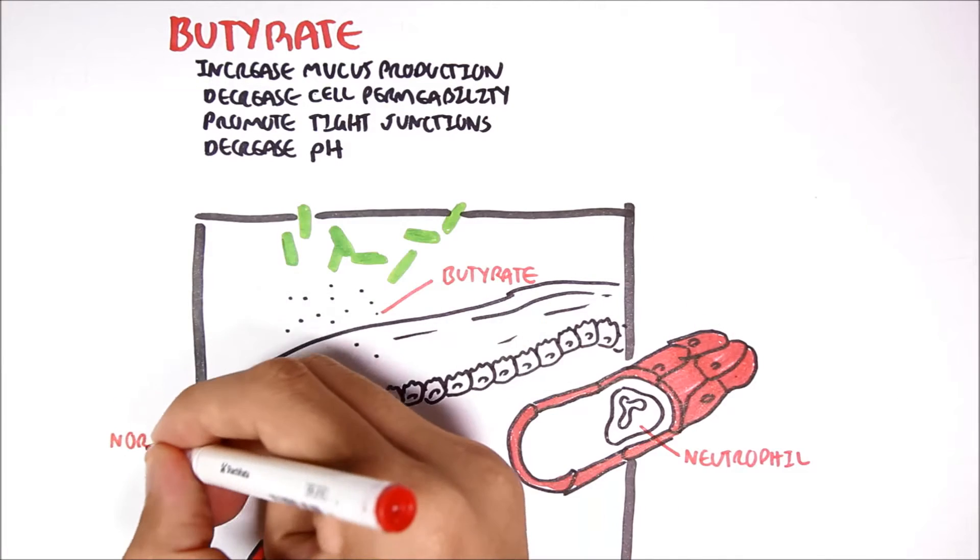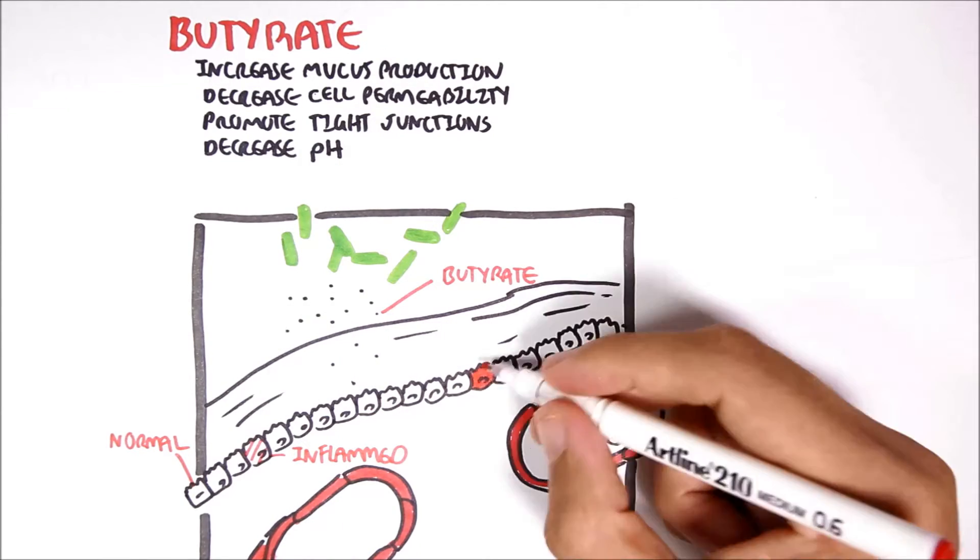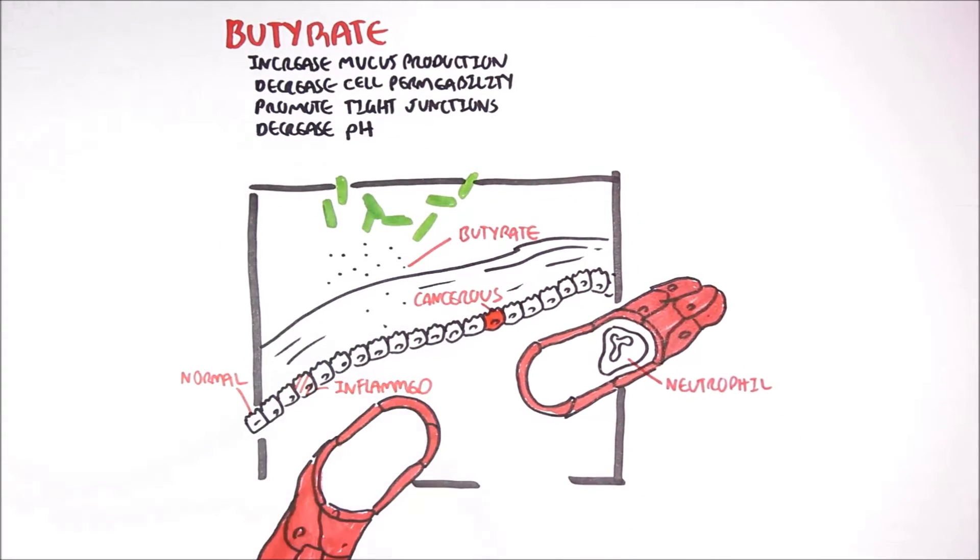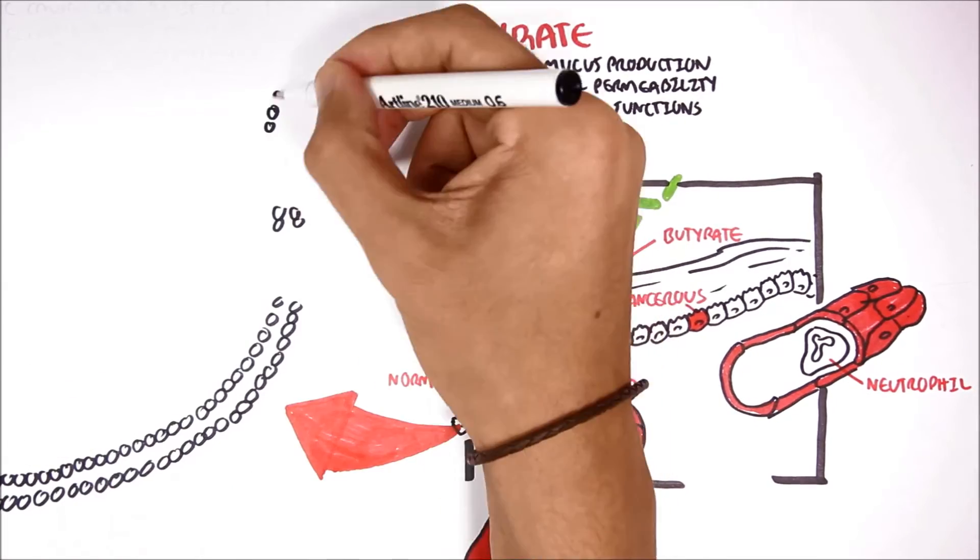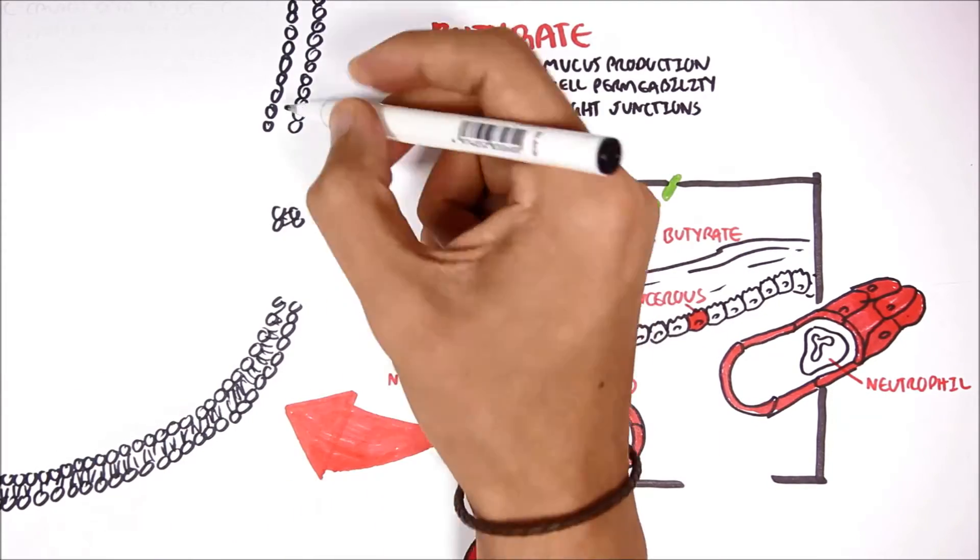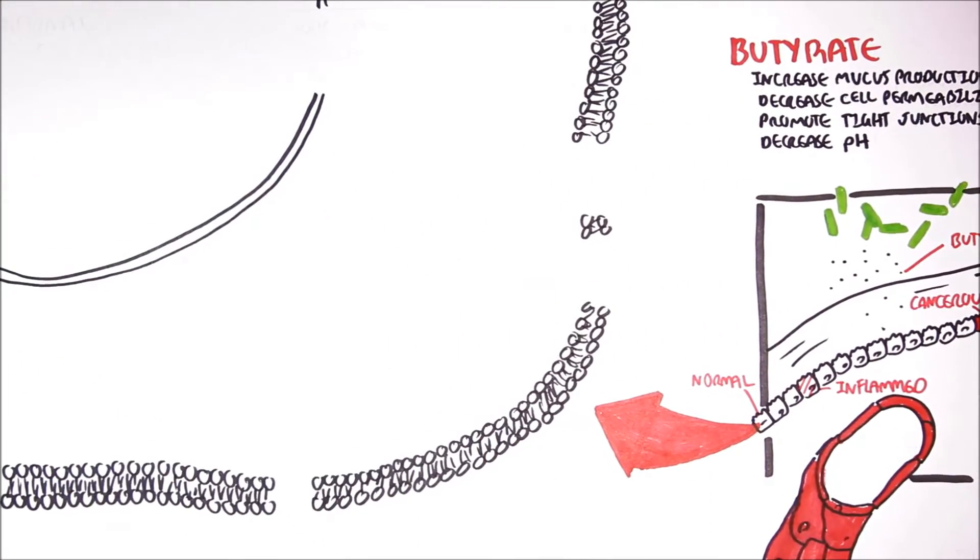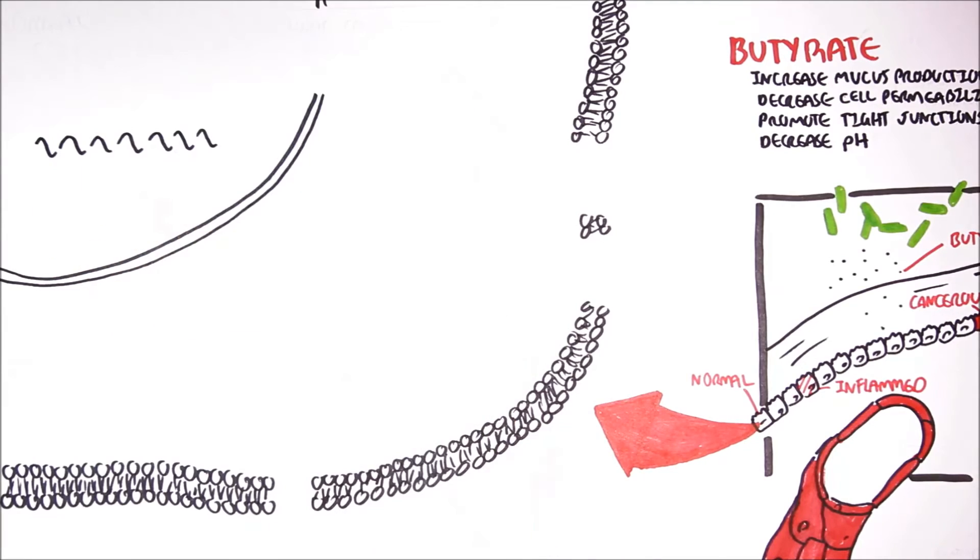We will focus now in more detail on the effects butyrate have on four specific types of cells: a normal colon cell, an inflamed colon cell, a cancerous colon cell, and the neutrophil. Let us begin with the normal colon cell. So here is a colon plasma membrane, the outer membrane. And here is a nucleus, which contains the DNA.